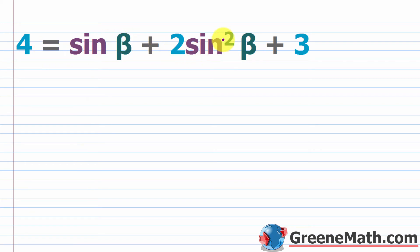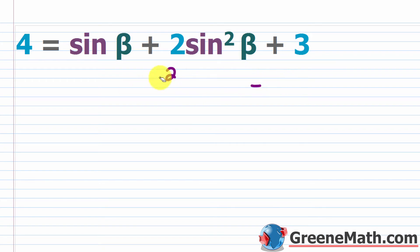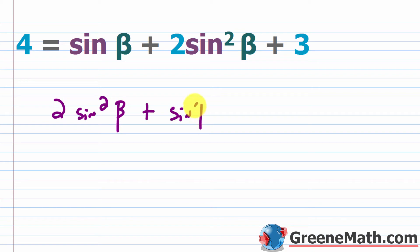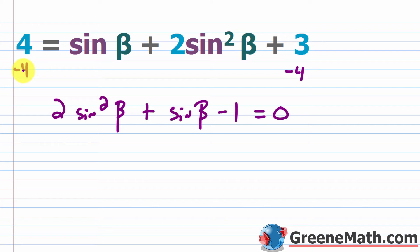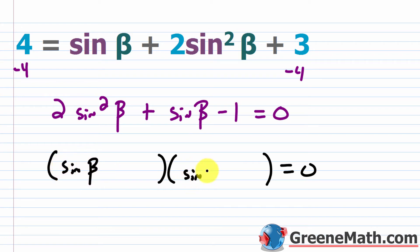For the next example: 4 equals sine of beta plus 2 times sine squared beta plus 3. When you see a squared term and a first-power term, think factoring — get it into ax² + bx + c = 0 form. Rearranging: 2 sine² beta plus sine beta minus 1 equals 0.